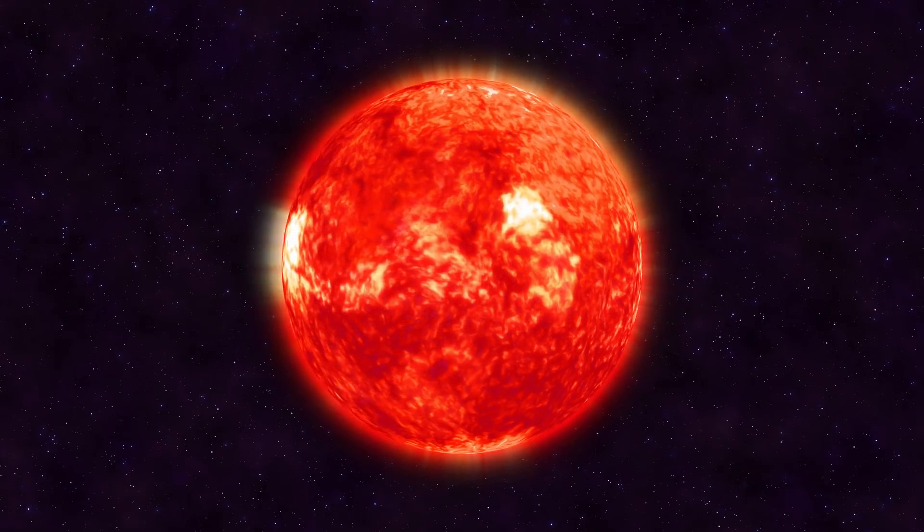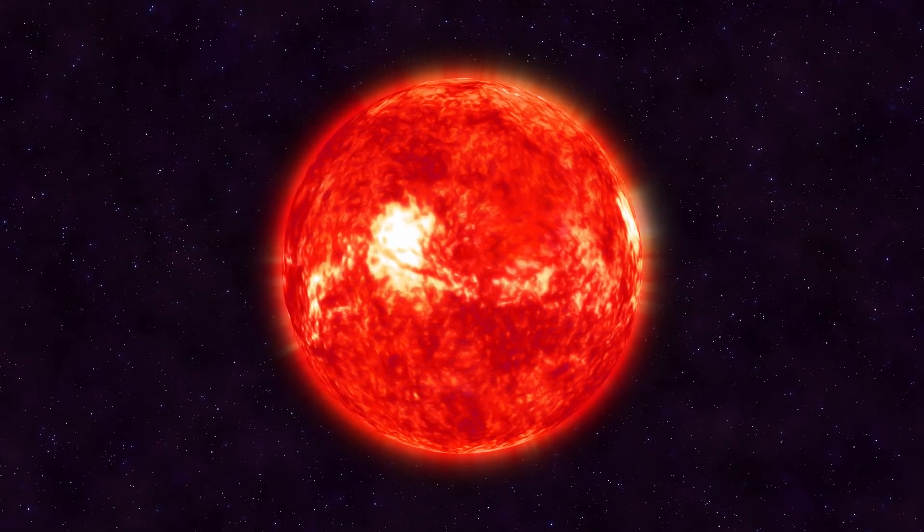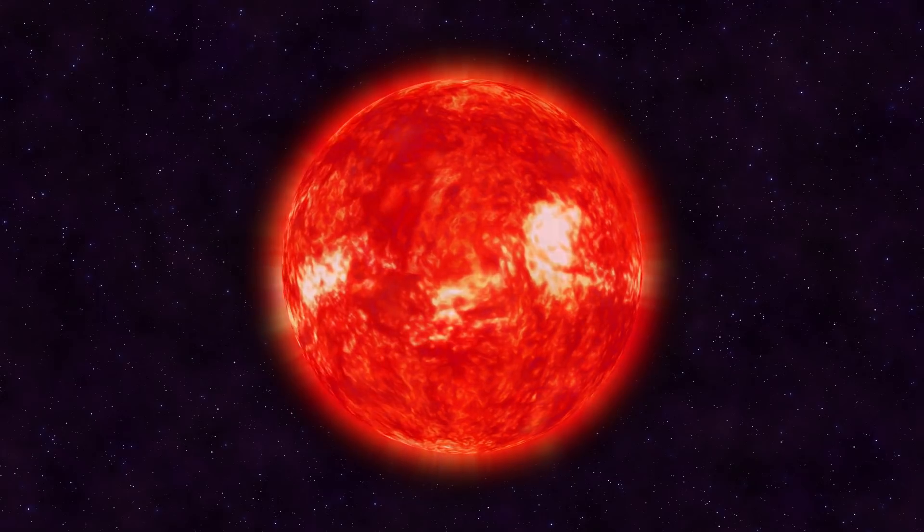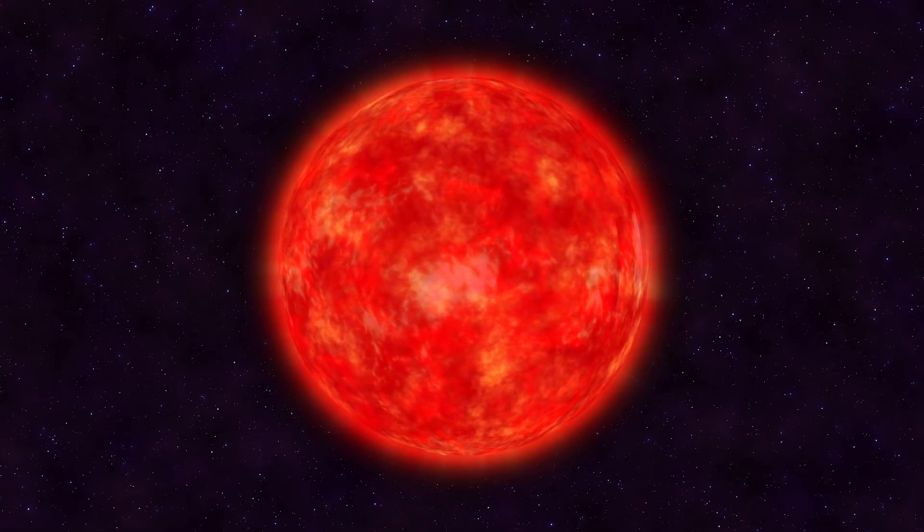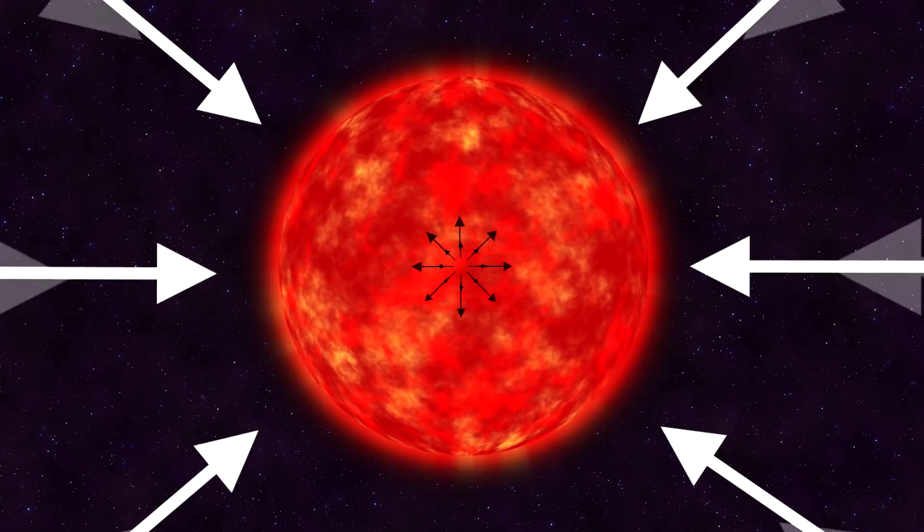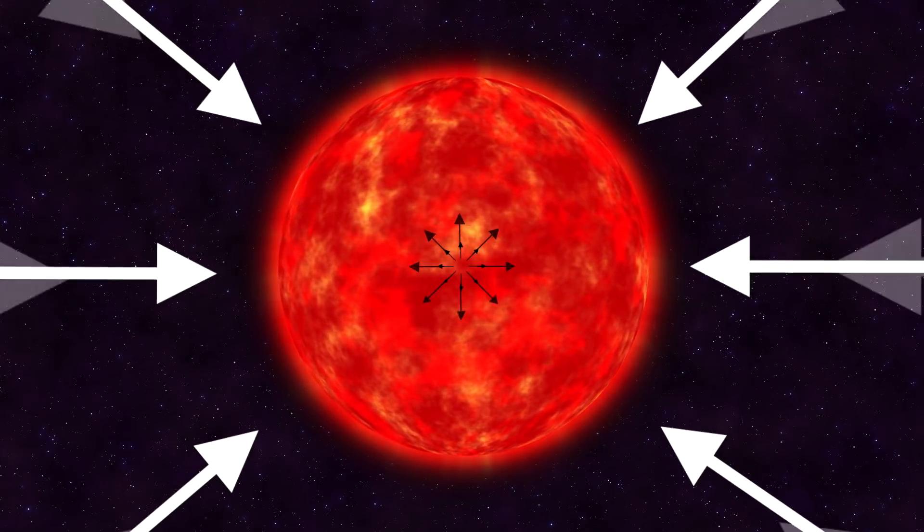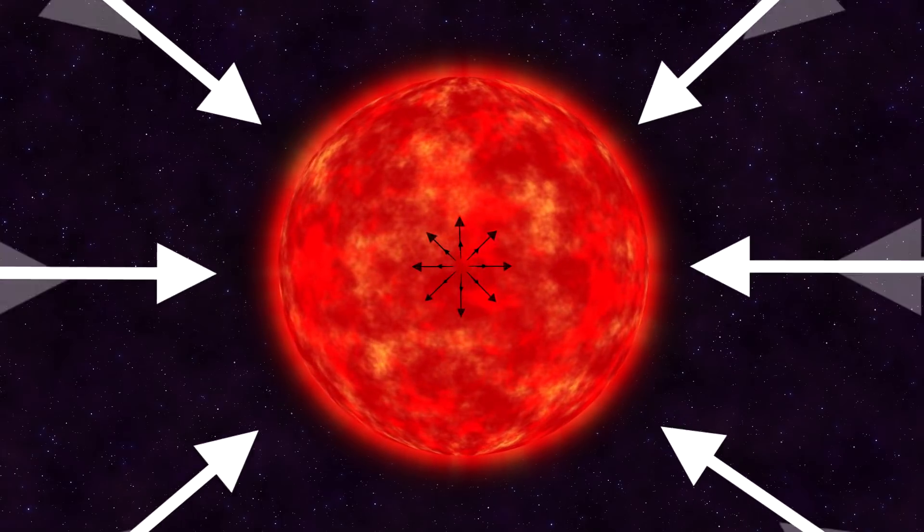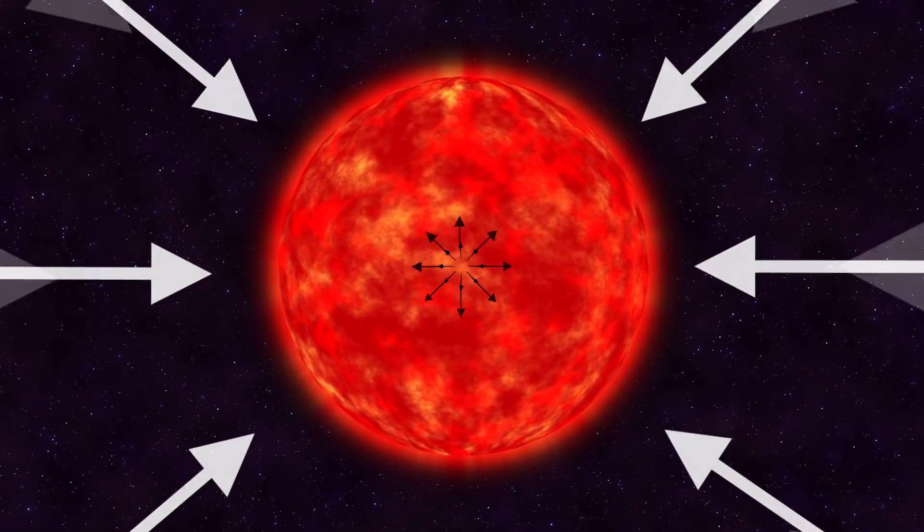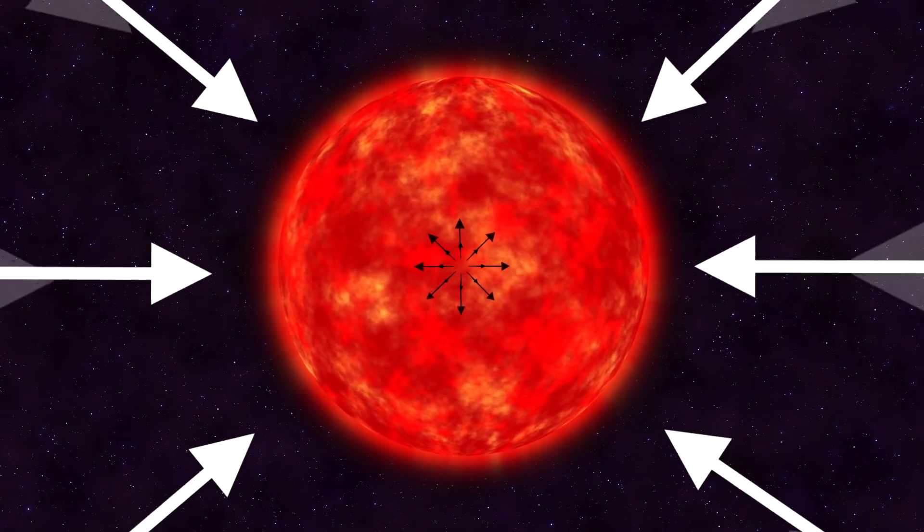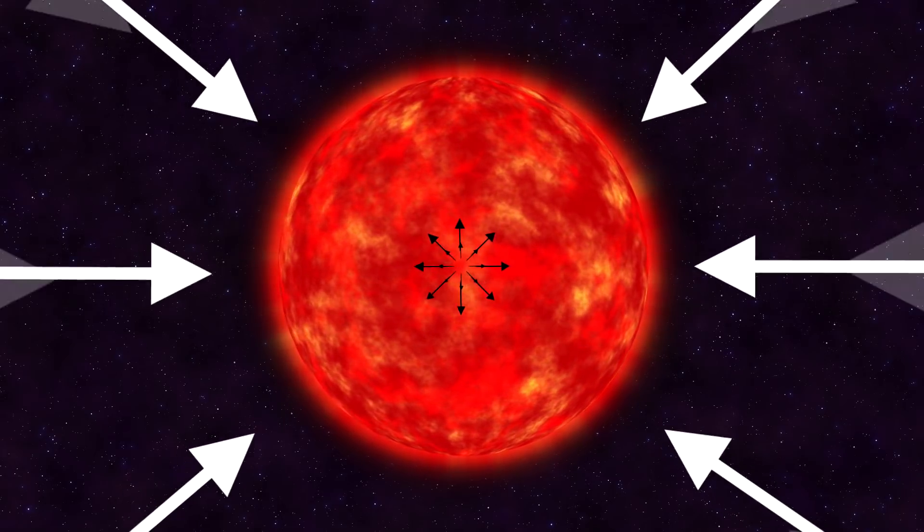Depending on the star's mass, it can keep fusing heavier elements. Inevitably though, a limit is reached when the star's mass is no longer sufficient to maintain nuclear fusion. The elements get too heavy and a limit is reached. The fusion stops. When the fusion ends, the radiation pressure fails as well. Countering the gravitational force of the star is no longer possible. A collapse becomes imminent.